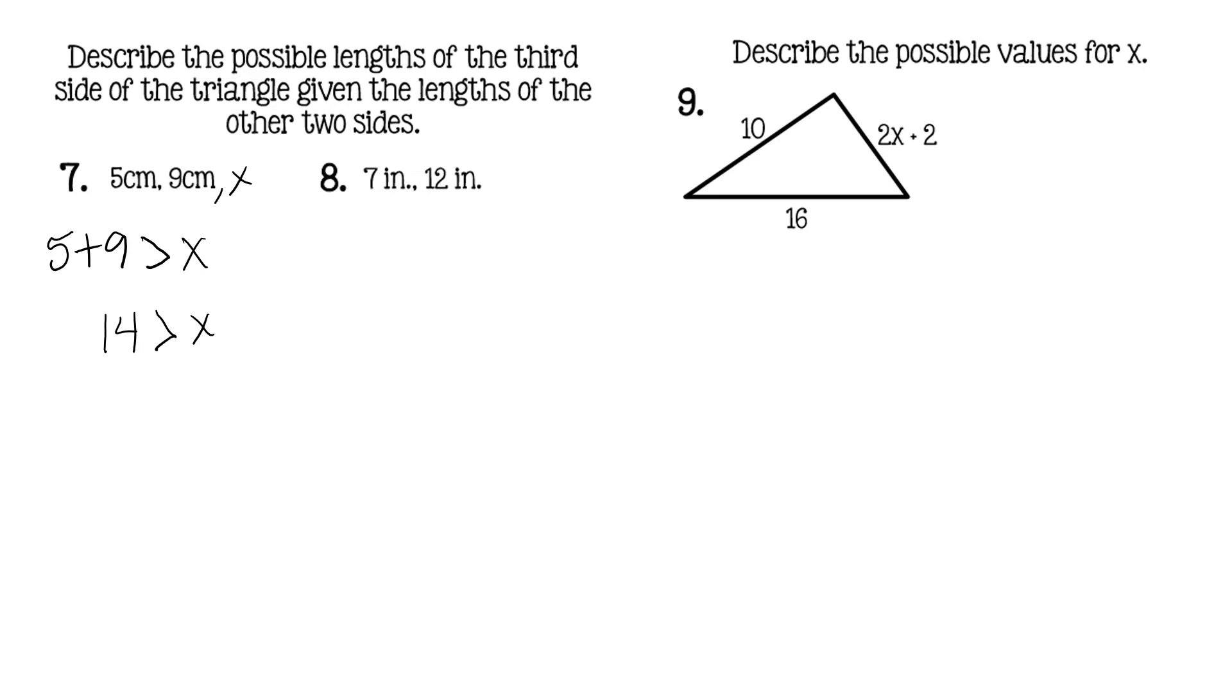14 is as large as X. X would have to be smaller than 14 to satisfy that. The other option is if 9 is the largest side. So we would take 5 plus X, and that would have to be greater than 9. Solving that, you would move the 5 to the other side. So X would have to be greater than 4.